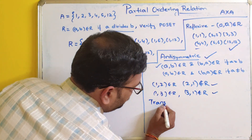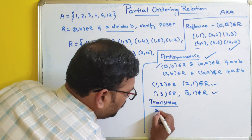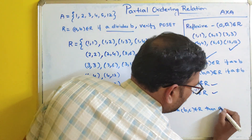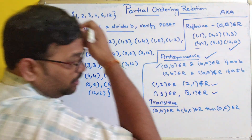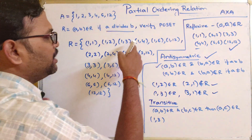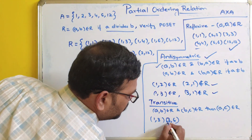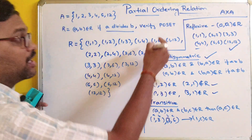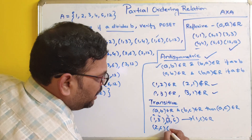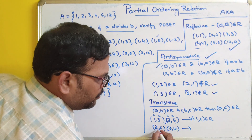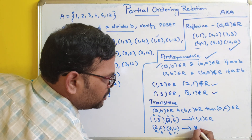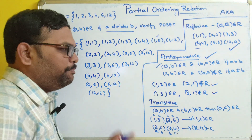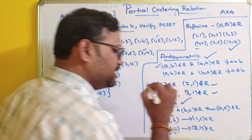The last property is transitive: if (a,b) belongs to R and (b,c) belongs to R, then (a,c) should also belong to R. Consider (1,3) and (3,6): then (1,6) should be in R — yes, it is. Consider (2,6) and (6,12): then (2,12) should be in R — yes, it is. You can check each pair similarly. The transitive property is also satisfied.